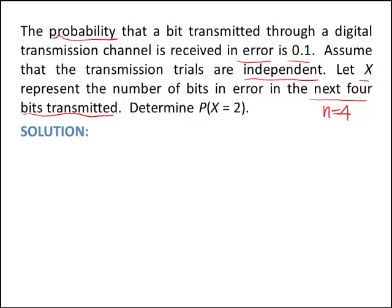Unfortunately here we're calling a success a bit that got transmitted in error. But when you say X is the number of successes, successes just means the number of times an event happened, and that could be a good thing or a bad thing. So don't be disturbed that a success is a bit being transmitted in error. But the probability of that happening is 0.1 and that stays constant. So for a binomial random variable to model it as a binomial, we really need to check three things.